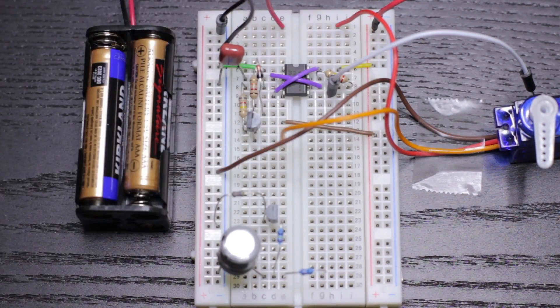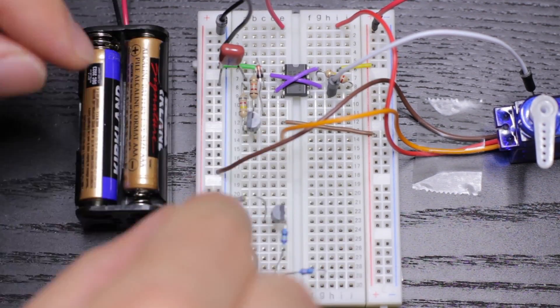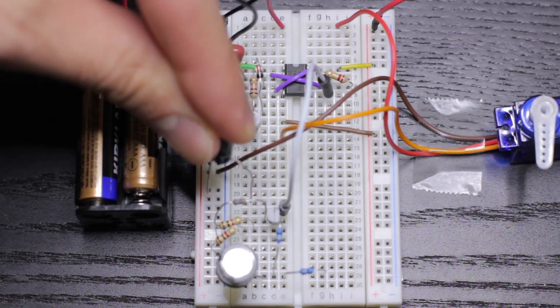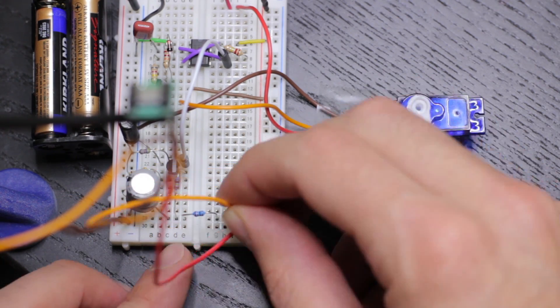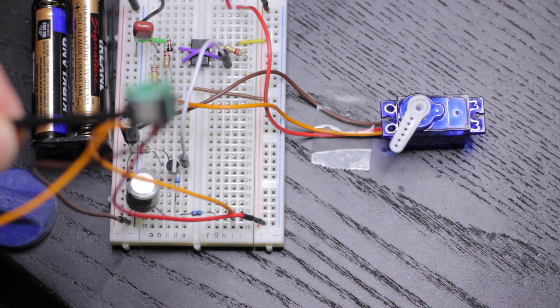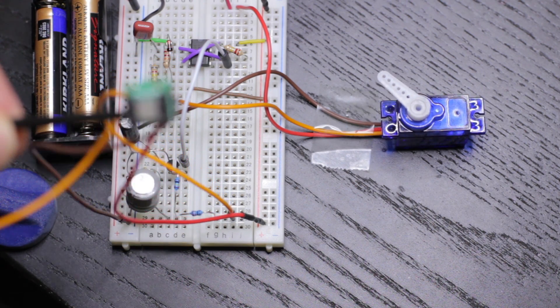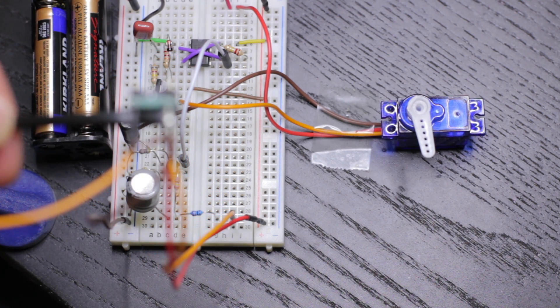The next step is to bias a transistor to source voltage from pin 5 of the IC. Then connect our accelerometer and voila, you can control the rotation of the servo.